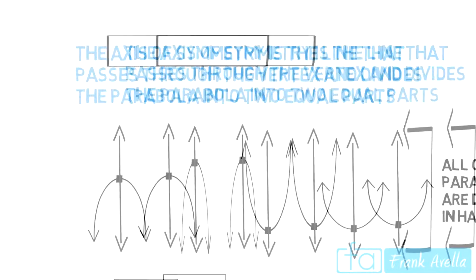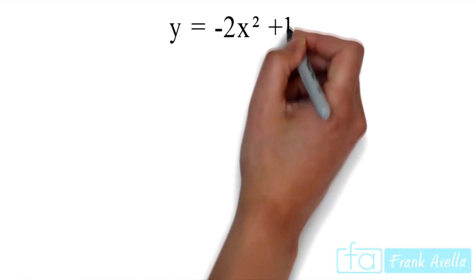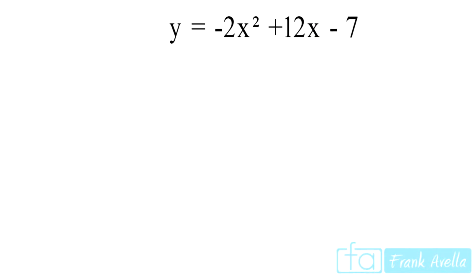So now let's go back to the original function: y equals negative 2x squared plus 12x minus 7.